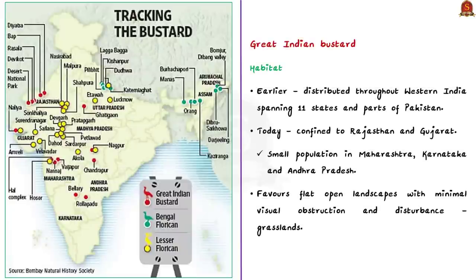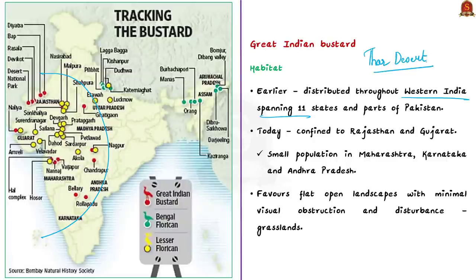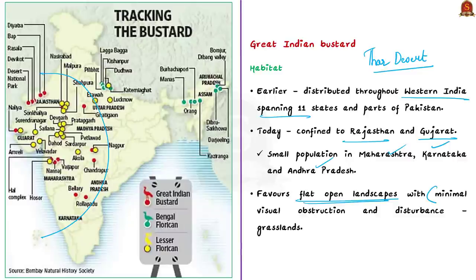Let us understand the Great Indian Bustard. Historically, it was distributed throughout western India across 11 states and parts of Pakistan. Its stronghold was the Thar Desert in the northwest — largely in Rajasthan, extending into Haryana, Punjab, and Gujarat. Today, its population is confined mostly to Rajasthan and Gujarat, with small populations in Maharashtra, Karnataka, and Andhra Pradesh. The species generally favors flat open landscapes with minimal obstruction, adapting well in grasslands. In the breeding season — between summers and monsoons — they congregate in traditional undisturbed grassland patches with tall grasses below 50 centimeters.